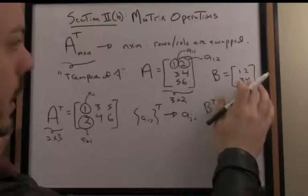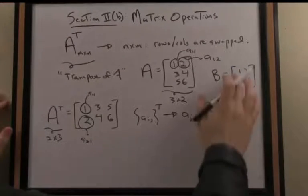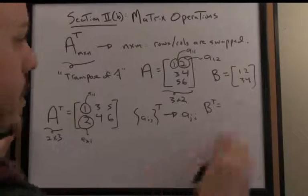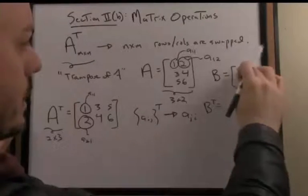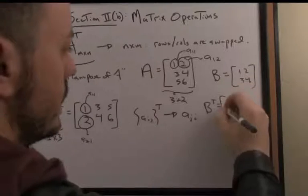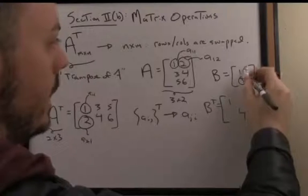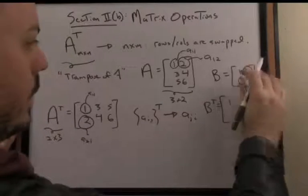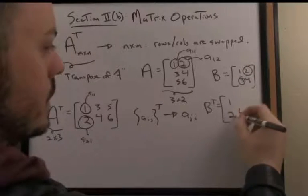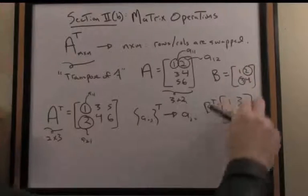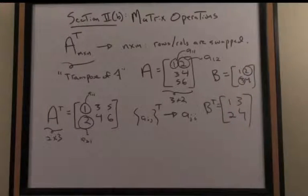Another way to think of this operation of swapping rows and columns is that the transpose leaves elements on the main diagonal, the 1 and 4, stationary and flips the off-diagonal elements across this diagonal. Row 1 becomes column 1, and row 2 becomes column 2.